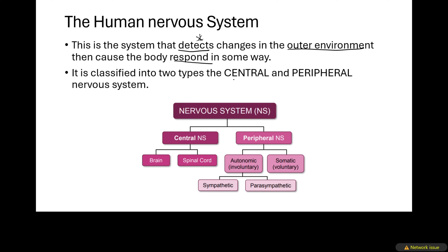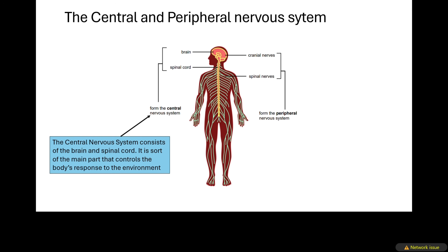The nervous system is classified into two main types: the central nervous system as well as the peripheral nervous system. This diagram shows the classification and divisions of the nervous system. The autonomic nervous system is further divided into two branches — the sympathetic branch as well as the parasympathetic branch.